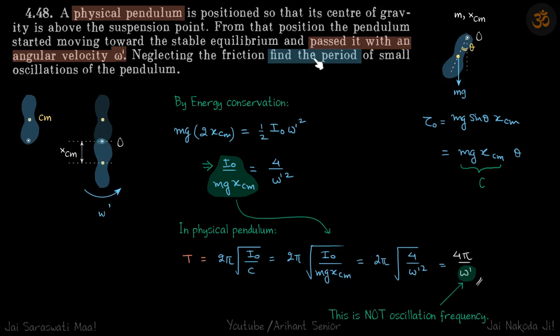The torque about point O, if you displace it by a small angle theta, will be mg sine theta times xcm. We don't know the exact value of xcm, but it will be of this form. For a small angle, this can be written as mg xcm theta. This is the torsion coefficient for the SHM because torque is proportional to theta. Let's keep this in mind because when we calculate the time period, we need the value of c.